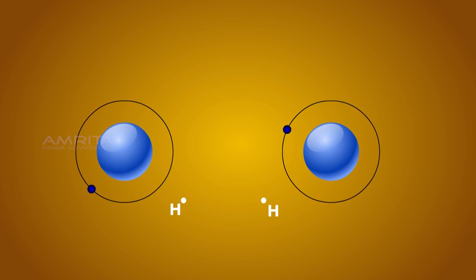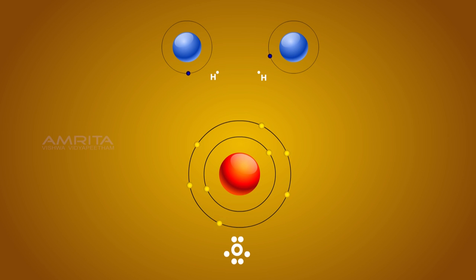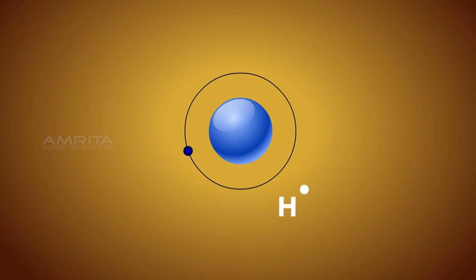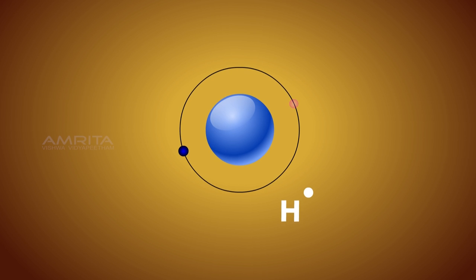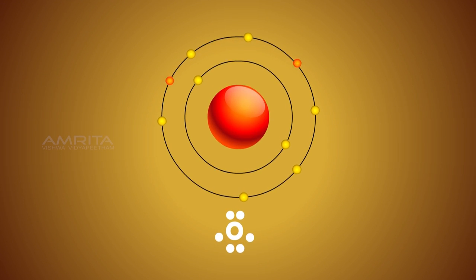The water molecule is formed by combining two hydrogen atoms with one oxygen atom. Hydrogen has one valence electron and oxygen has six valence electrons. The hydrogen atom with one valence electron needs an additional electron to complete its first energy level, and oxygen atom with six valence electrons needs two additional electrons to complete its second energy level.